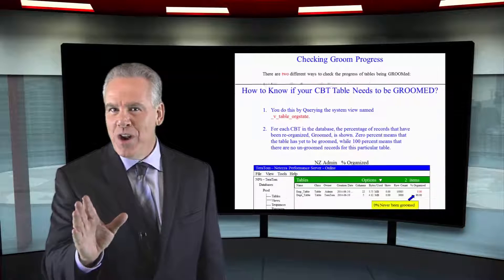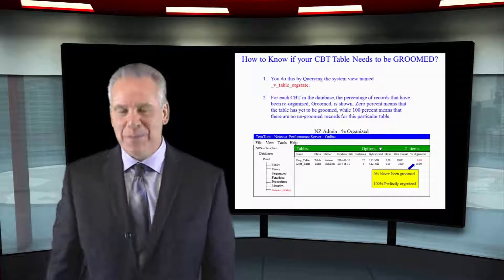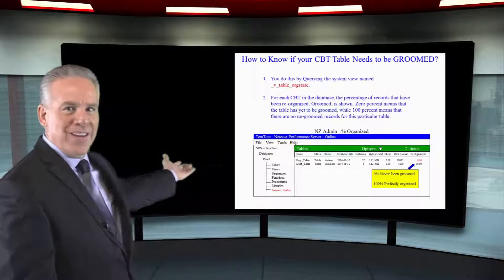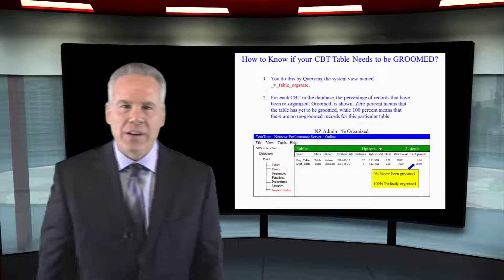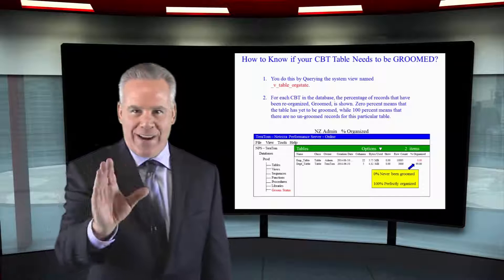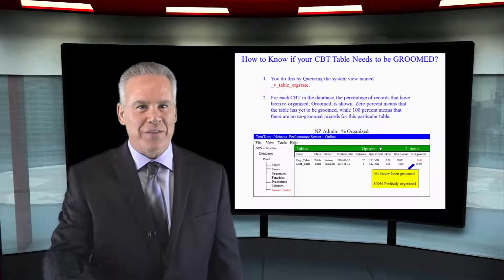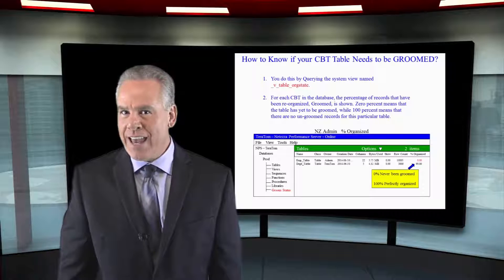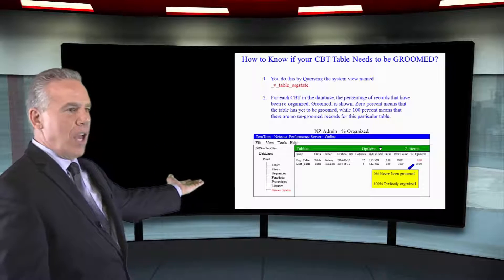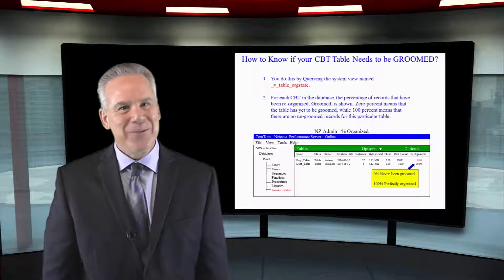You may want to know which CBT tables have been groomed or have not been groomed. You can go to NZ_ADMIN and do it that way, or use V_TABLE_ORGANIZE — that's the system table that will show you this information. If you're in NZ_ADMIN and you see 0%, then it hasn't been groomed.